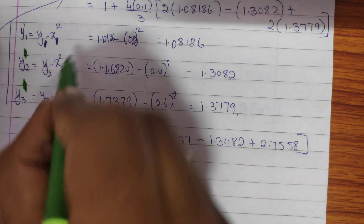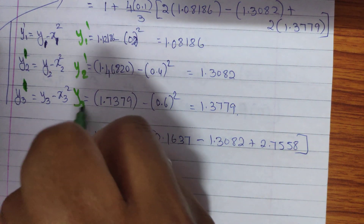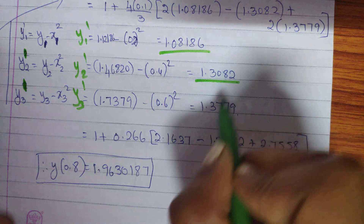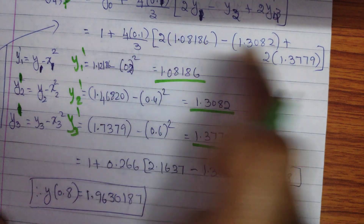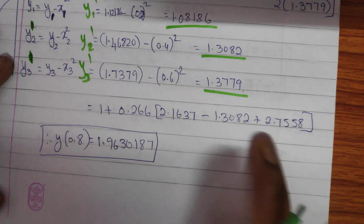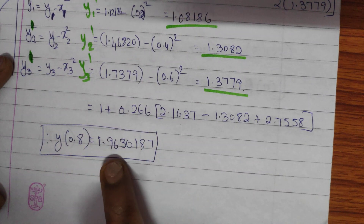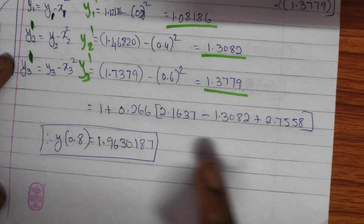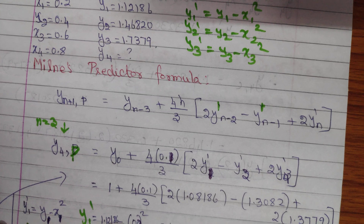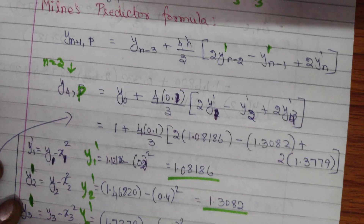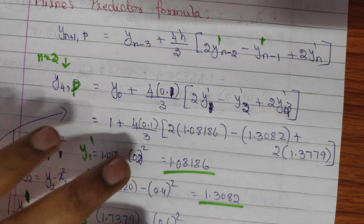Using the calculated values of y1', y2', and y3' and substituting them into the predictor formula, the final value of y(0.8) is 1.9630187. Similarly, the corrector formula would also need to be applied using these derivative values.